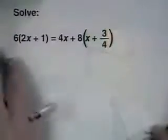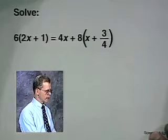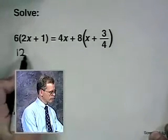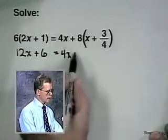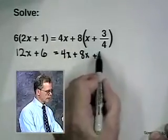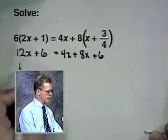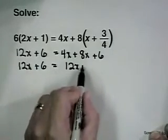Let's take a look at an equation that is an example of one of these two. If 6 times (2x + 1) equals 4x plus 8 times the quantity (x + 3/4), the first thing we would do to solve this equation is remove the parentheses. 12x + 6 equals 4x + 8x, and 3/4 times 8 is 6. Then we'll combine some like terms. 12x + 6 equals 12x + 6.